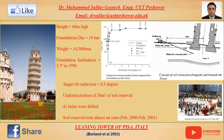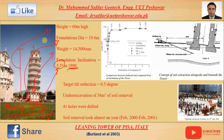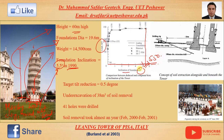The tilt was measured at approximately 5.5 degrees in 1990. The weight of the tower is equal to 14,500 tons, and the diameter is 19.6 meters. The height of the tower is 60 meters. This graph shows on the x-axis the inclination of the foundation in degrees, and on the y-axis the load applied in mega newtons. So 14,500 tons equals 145 mega newtons, and a 5.5-degree tilt has been observed.